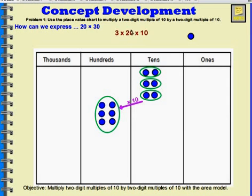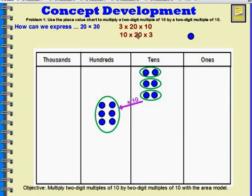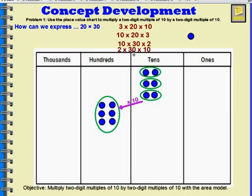And it didn't matter whether I did it this way, or this way, or this way, or this way — because they all ended up equaling 600.